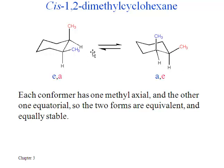The ring can and will flip, but in this case you still end up with one of each, one axial, one equatorial. So both of these are equal in stability, and drawing these two arrows of equal length is also a way to imply that that's true.